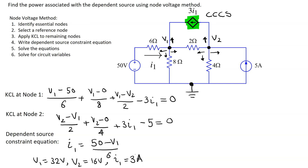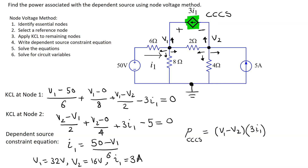After solving the equations, we can solve for the circuit variables. In this case, we have to find the power associated with the dependent source, so let us assign a reference polarity. The power associated with the current controlled current source is the product of the voltage drop and the current. With this reference polarity, the voltage drop across this dependent source is V1 minus V2, and the current is the magnitude which is 3I1. We need to use passive sign convention to decide the sign of the power calculation. We can see that this current is entering the terminal marked negative.